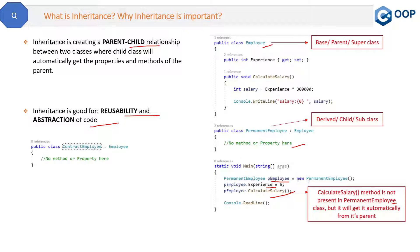For example, if tomorrow you get a new type of employee — a ContractEmployee — you can derive from the same Employee base class to get the 'experience' property and 'CalculateSalary' method. You don't need to rewrite them. If you didn't use inheritance and didn't have this base Employee class, you would have to write that one property and one method inside both ContractEmployee and PermanentEmployee classes separately. By writing them in one place, you can use them in all derived classes — that is what inheritance is and why it is used.